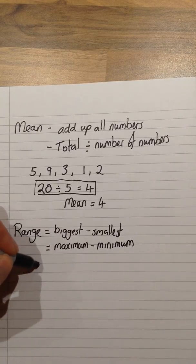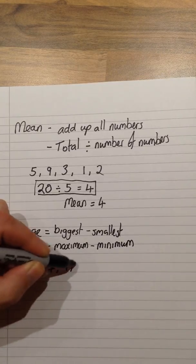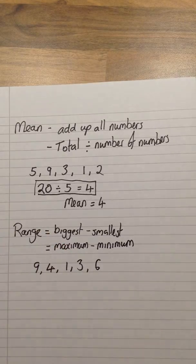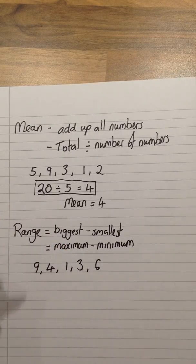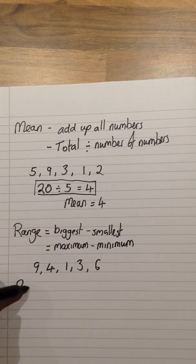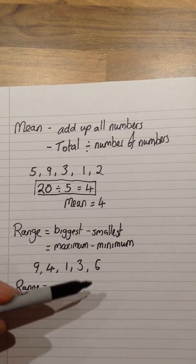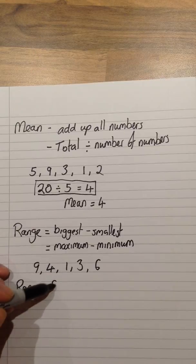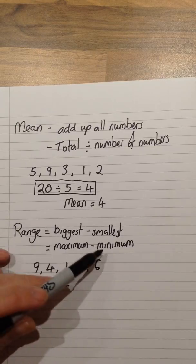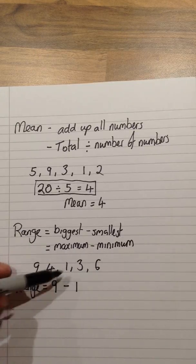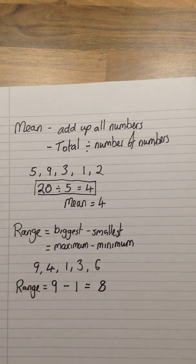So if I had an example and I said I wanted to find the range of these numbers here, all I would need to do is write down range equals. I would look through the list for the maximum, in this case 9, take away the minimum, in this case 1. Therefore my range is 8.